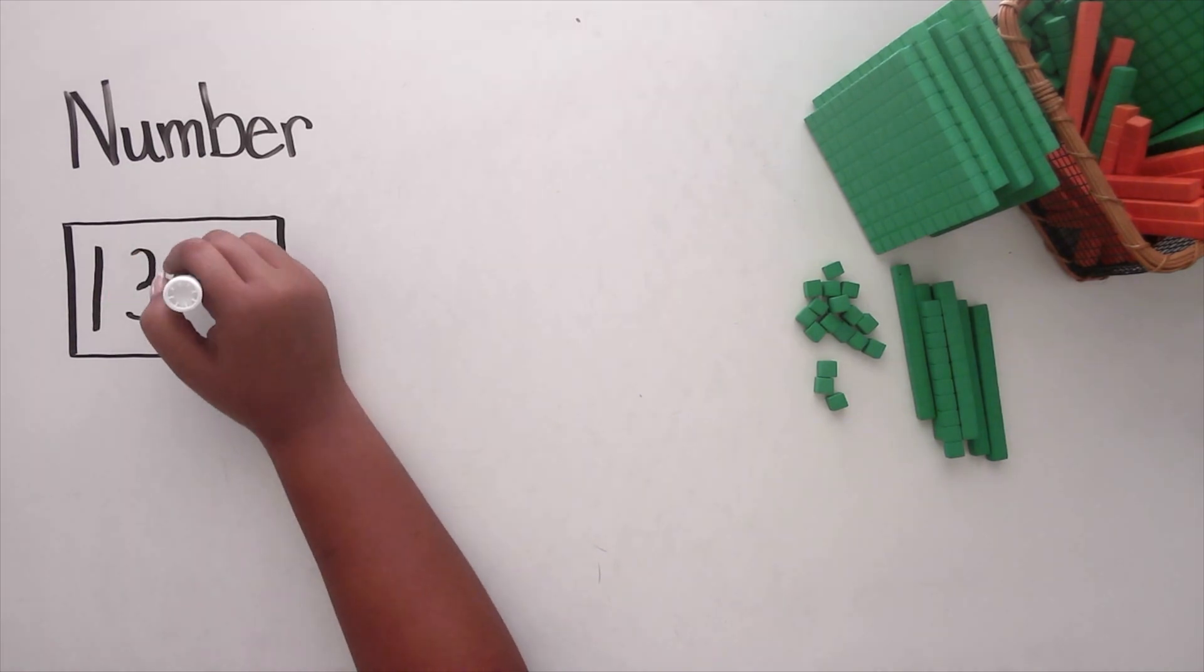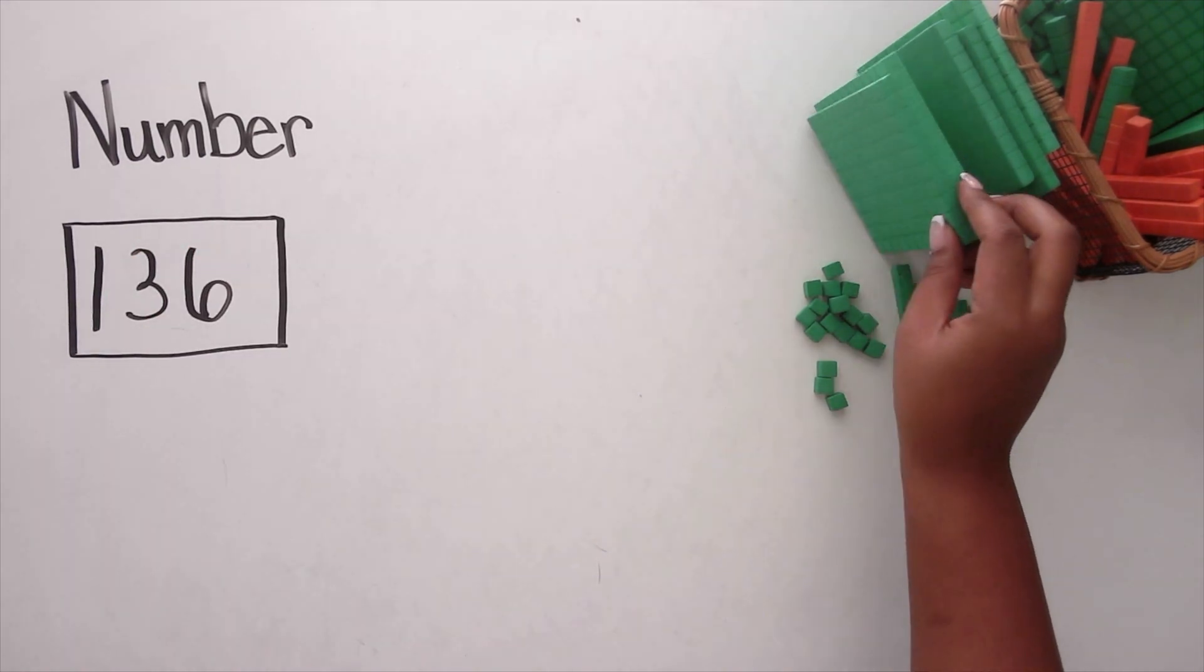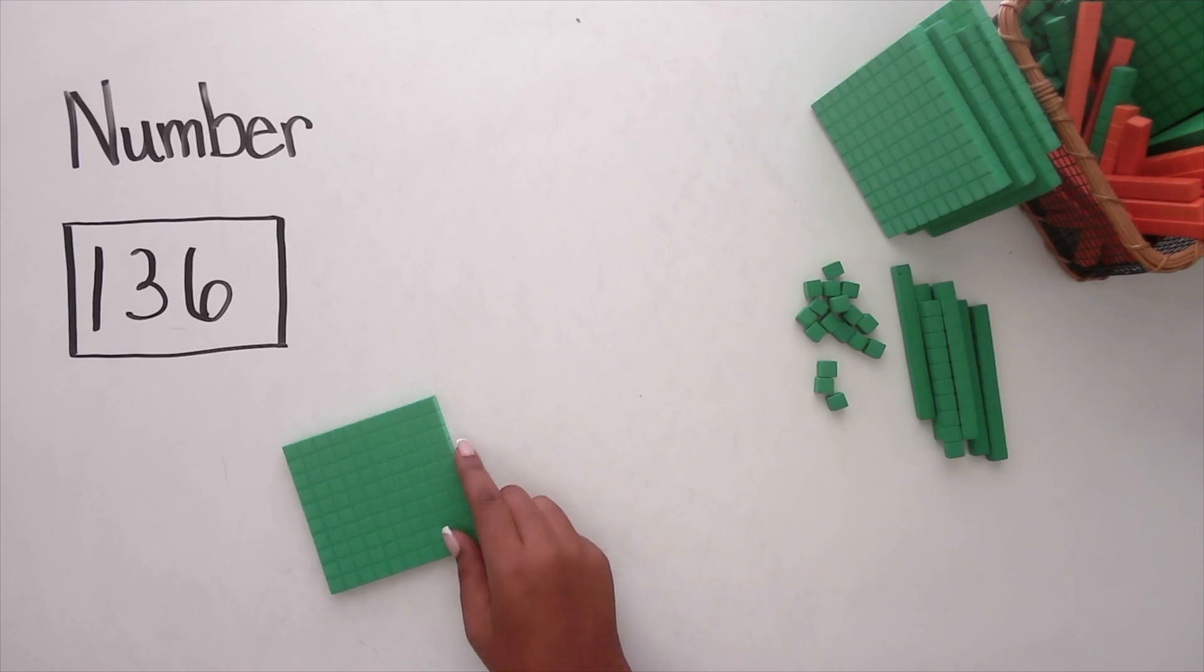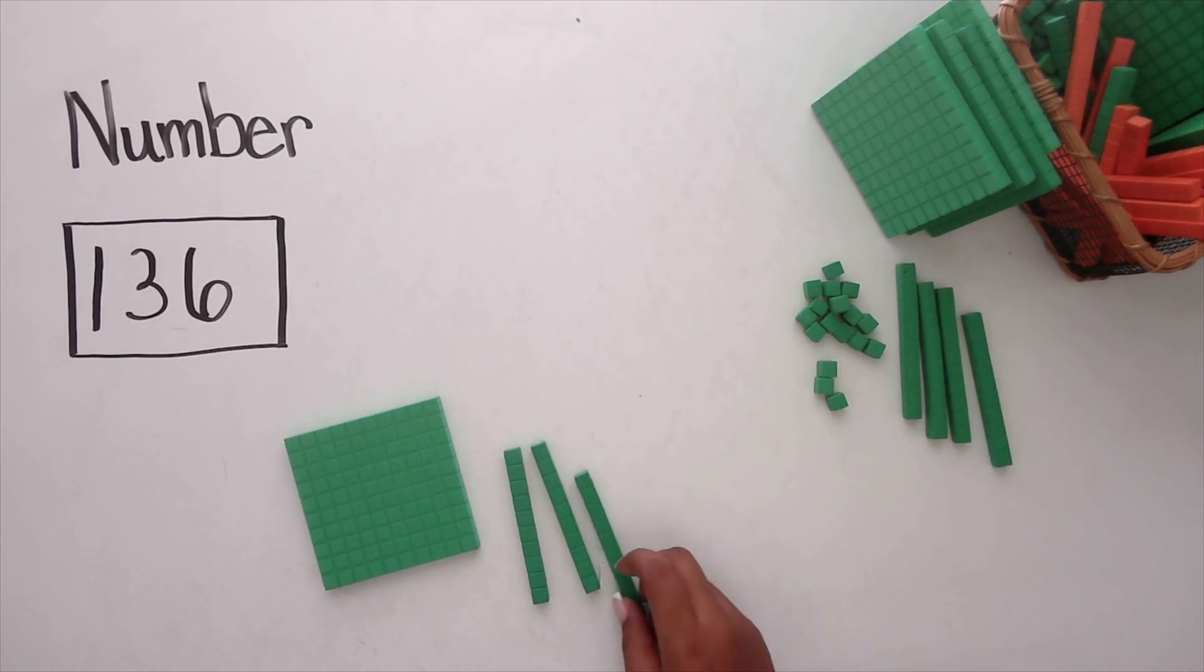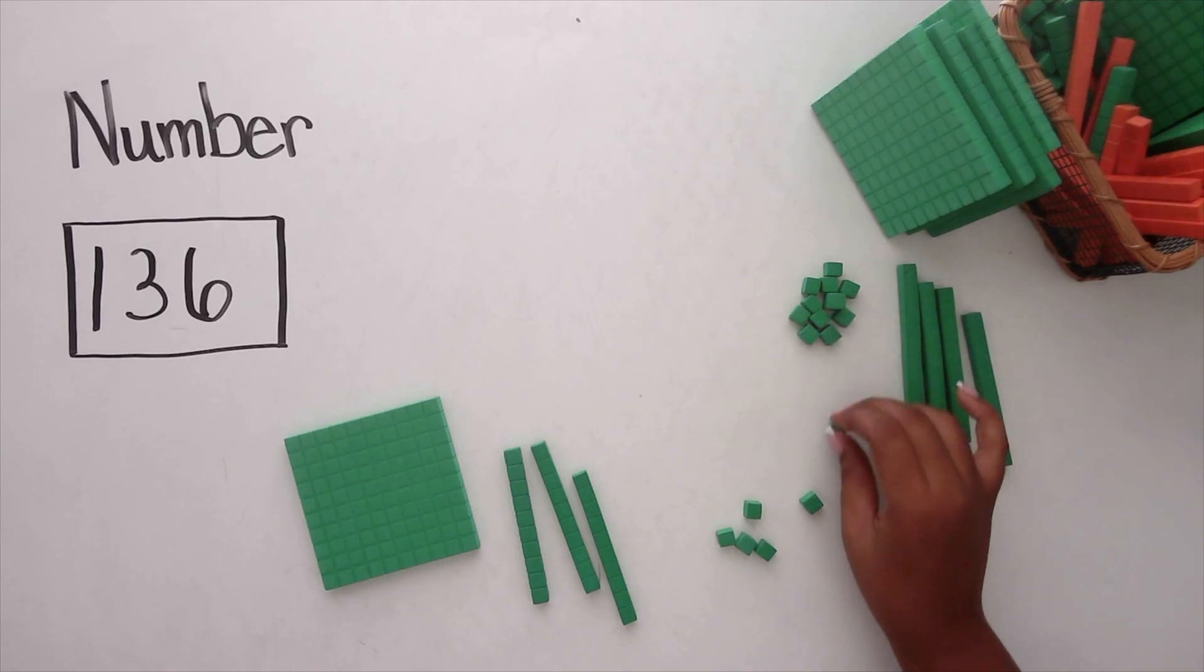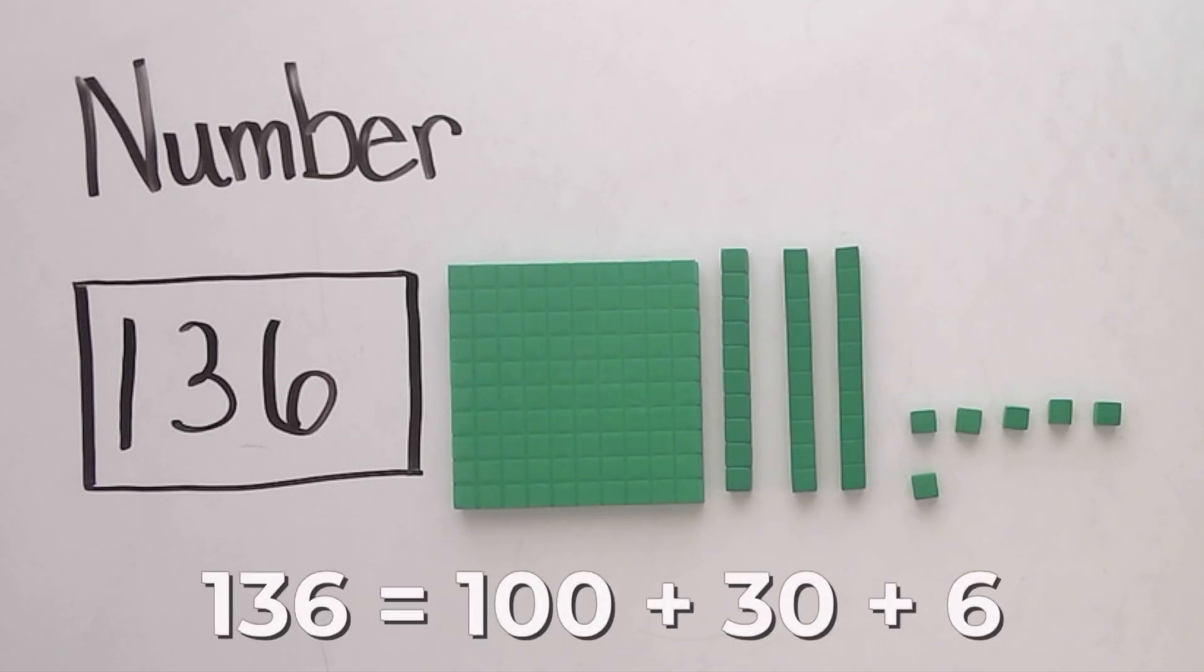Let's start with an example. Say we want to show the number 136. We can grab one flat to represent 100, three rods to represent 30, and six units to represent six. When we line them up, we've built 136.